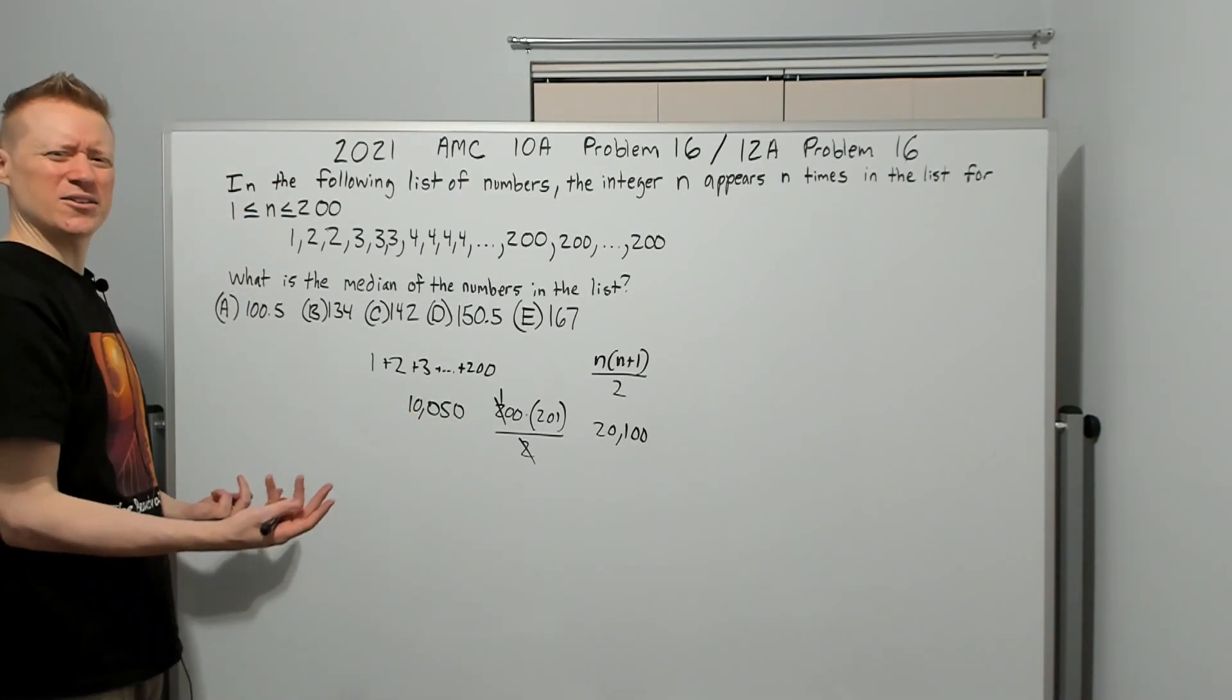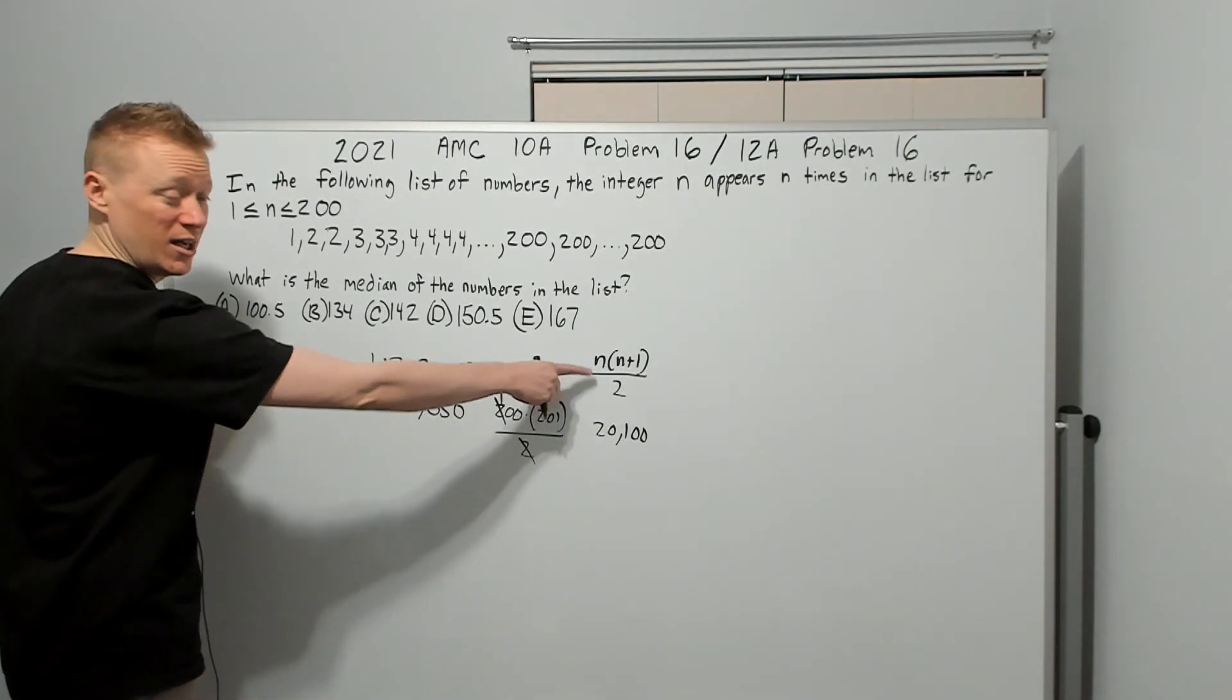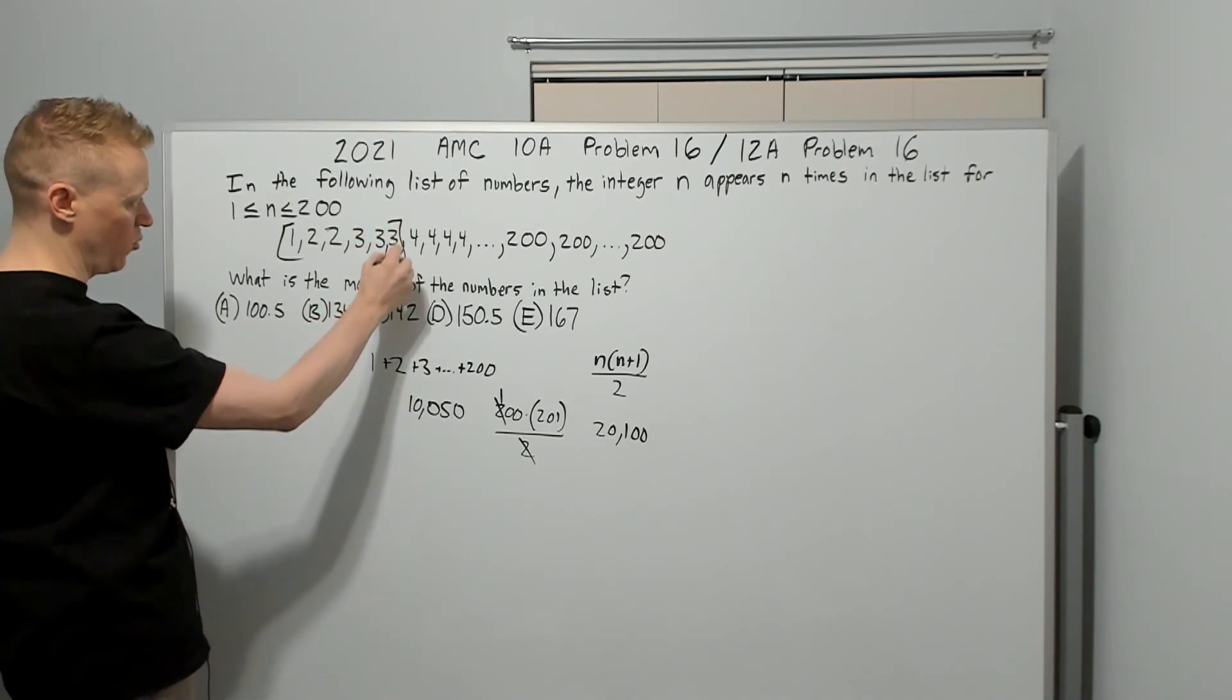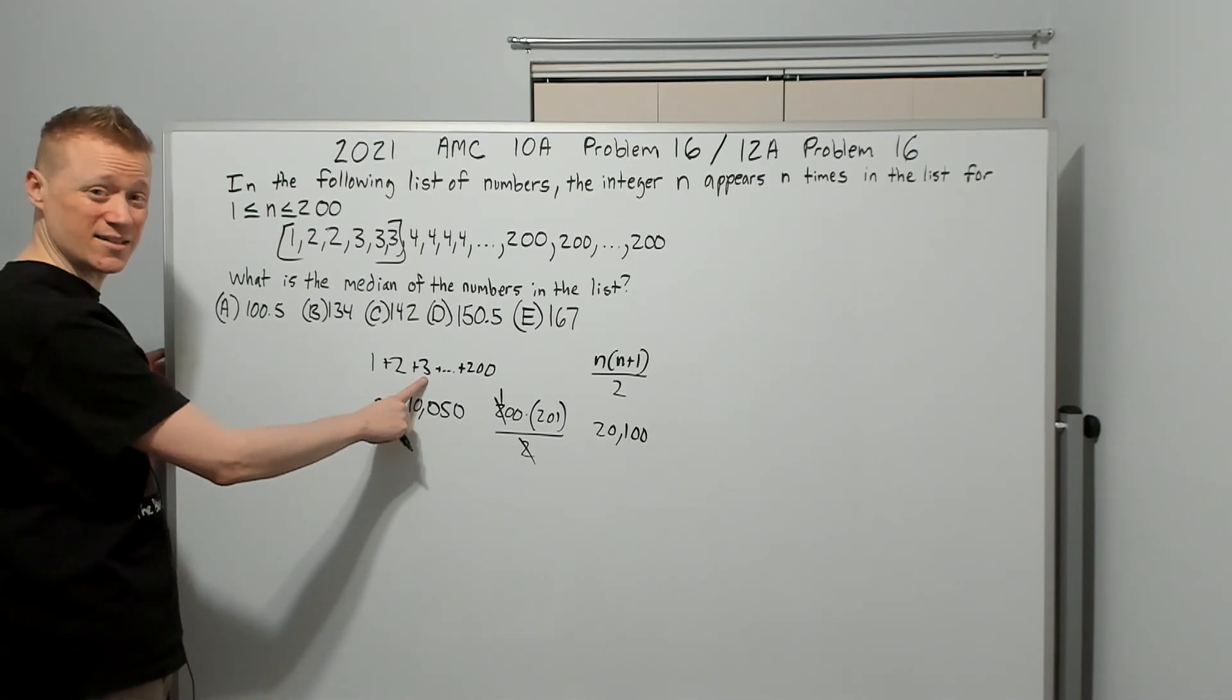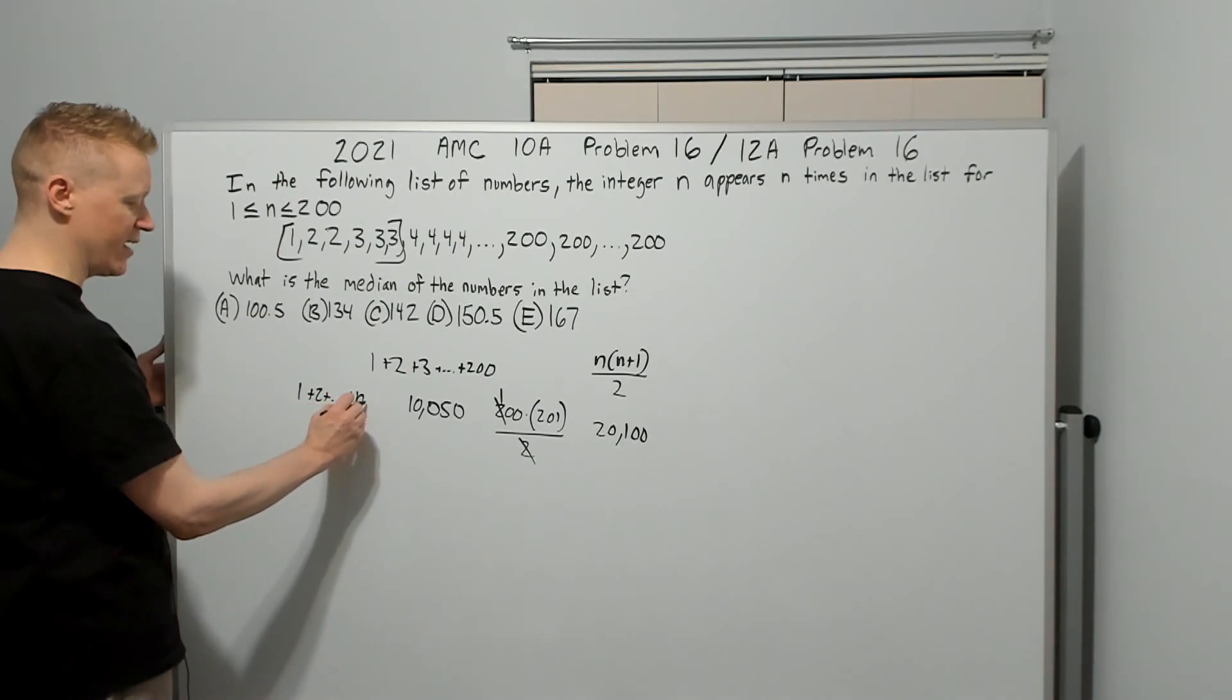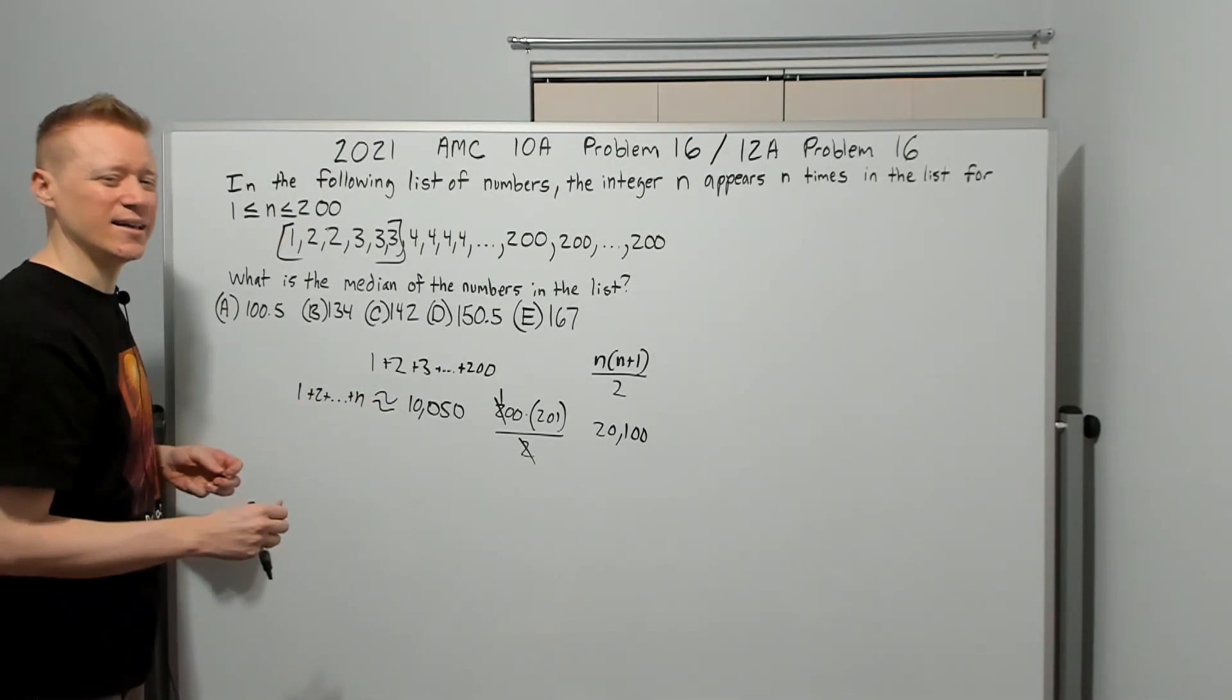How are we going to find out what the 10,050th term is? We're going to use a very similar process. I want to know what iteration we were on. For example, this 3 represents the third iteration, meaning that after I've added up 1, 2, and 3, I've got the total number of terms after I've written all my 3s. I want to know after I've written all of my n's, some number n that needs to be approximately equal to this.